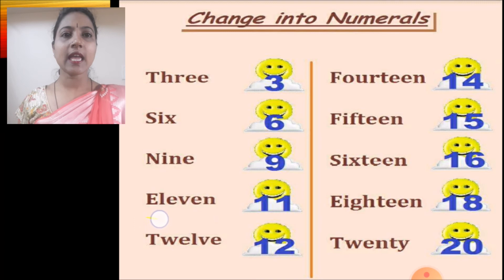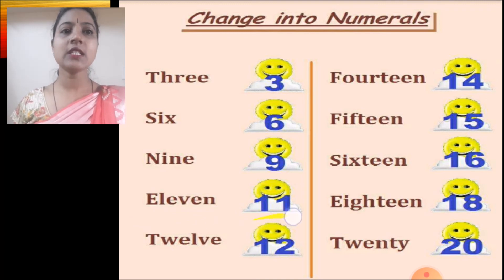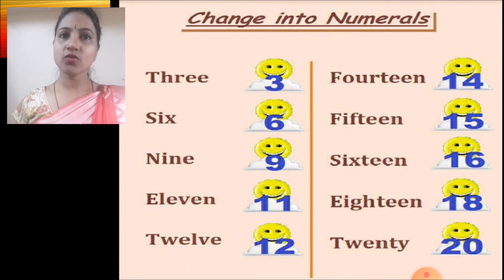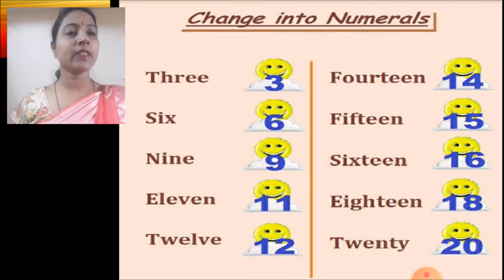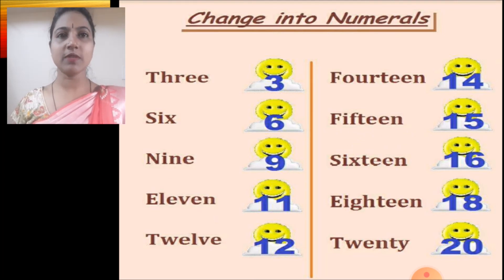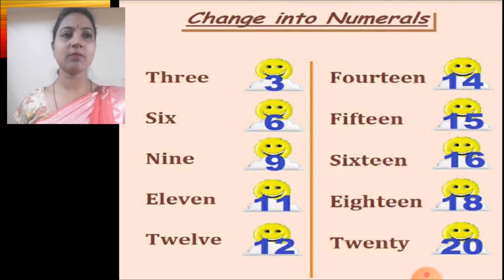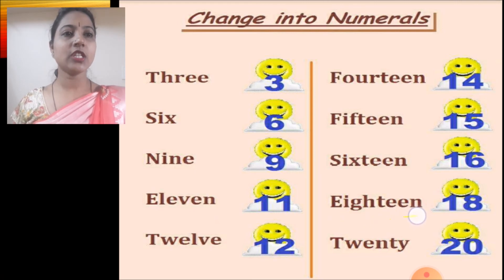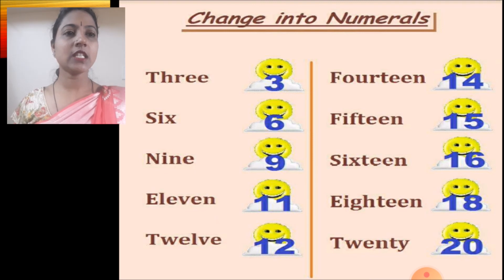Next one is E-L-E-V-E-N, 11, so you will write 11. Next is T-W-E-L-V-E, 12, so you will write 12. Next one is F-O-U-R-T-E-E-N, 14, so you will write 14. This is F-I-F-T-E-E-N, 15, so you will write 15. Next one is S-I-X-T-E-E-N, 16, so you will write 16. E-I-G-H-T-E-E-N is 18, so you will write 18. And the last one is T-W-E-N-T-Y, 20, so you will write 20.